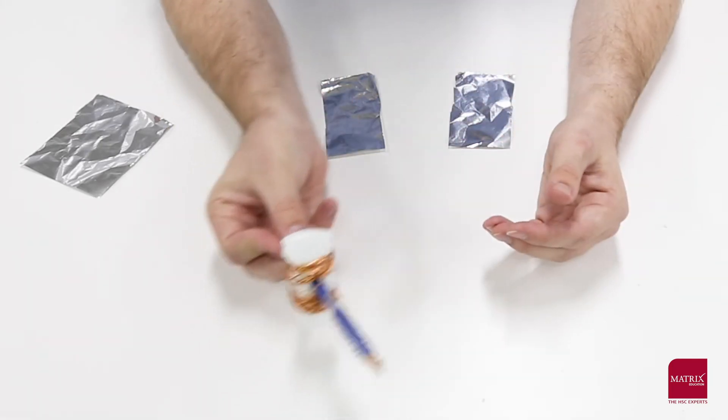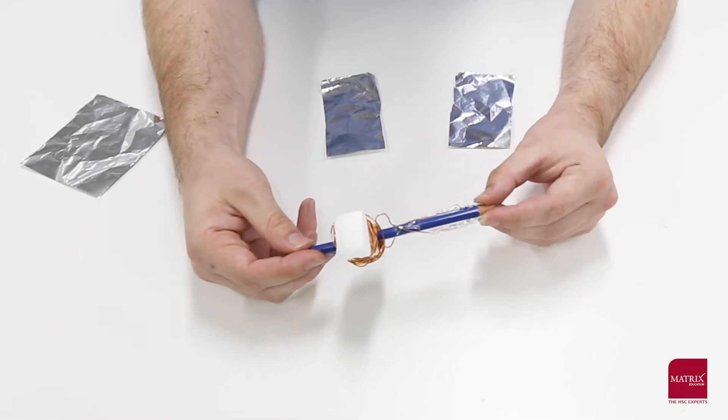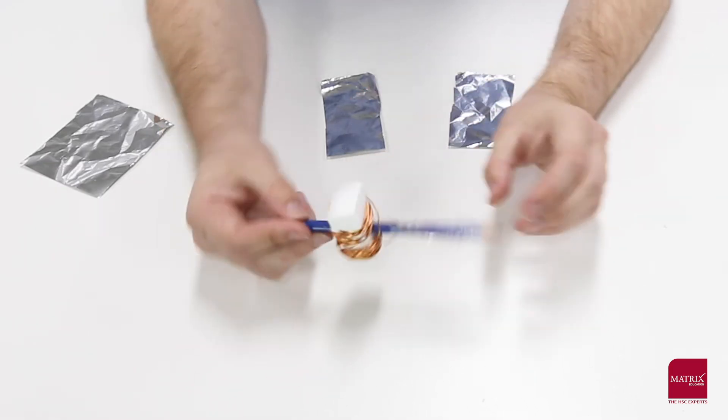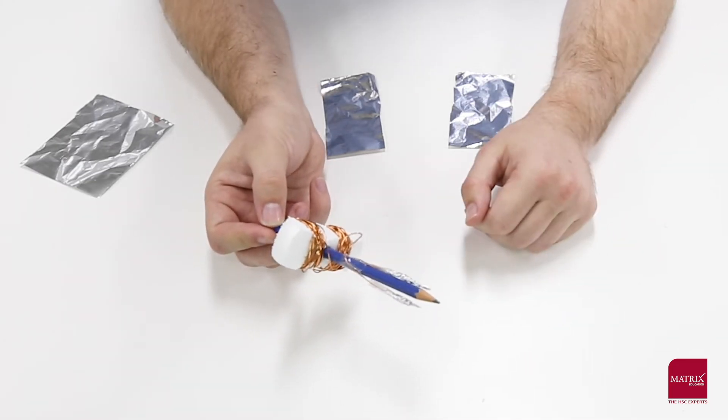We've got the bases of the commutator stuck in the positions that we're going to want them. When the coil is horizontal, the two ends of the commutator are horizontal. Now this could work as a motor already, although the contact wouldn't be very good.